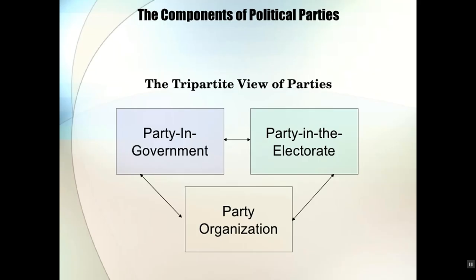Let's get started with the first learning objective: describing the three faces of the modern American political party. The three faces are the party in government, the party in the electorate, and the party organization — or PIG, PIE, and PO. Generally speaking, we tend to talk about parties as though they are unitary actors — an individual or group that operates with a single goal, a single set of priorities, and a single understanding of how best to achieve those goals.